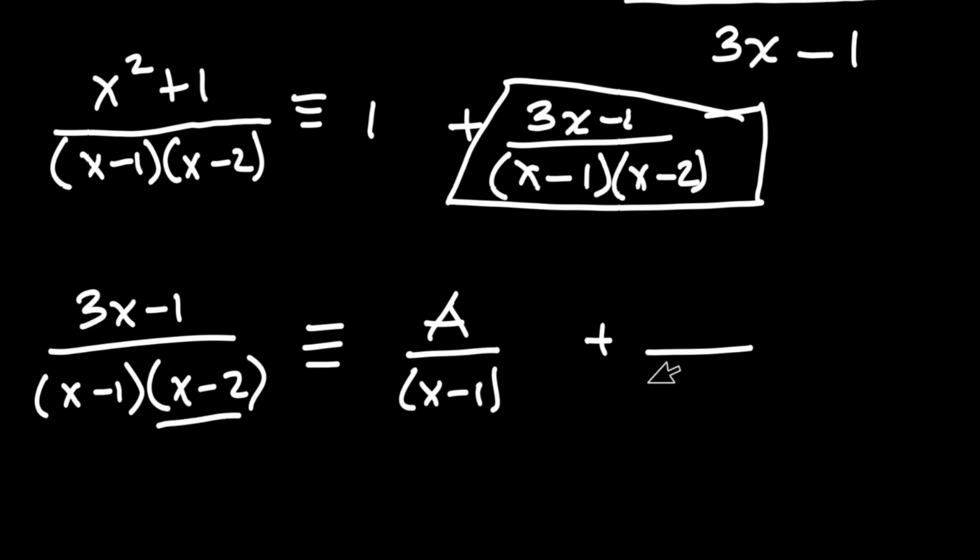Then the second factor, we have x minus 2. This is also linear. Therefore, the numerator has to be a constant.